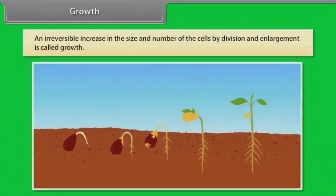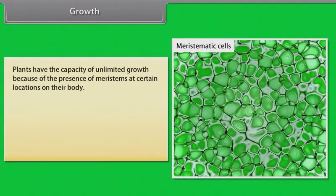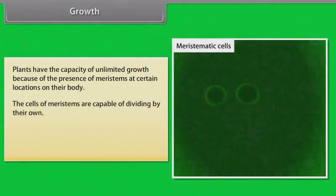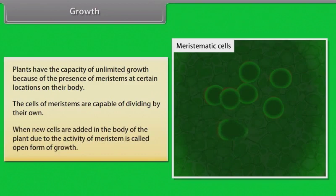An irreversible increase in the size and number of cells by division and enlargement is called growth. In plants, the growth generally is indeterminate. Plants have the capacity of unlimited growth because of the presence of meristems at certain locations on their body. The cells of meristems are capable of dividing by their own. When new cells are added in the body of the plant due to the activity of meristem, it is called open form of growth.